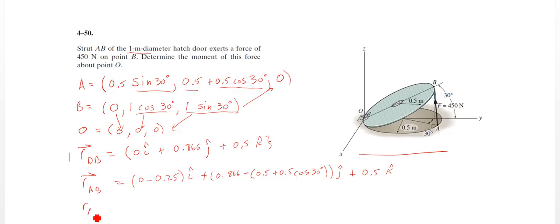So if we do the math there, our RAB position vector, negative 0.25I plus, minus, excuse me, minus 0.06699J. So very close to 0 there, but a little bit negative. And then plus 0.5 K. So that's our position vector from A to B. So that's our line of action for our force. We have our other position vector here for our moment arm. So we're going to cross that with this times the magnitude. So we need to make a unit vector for RAB.